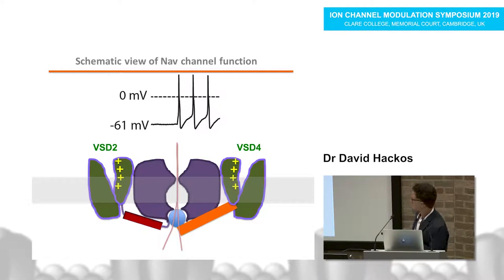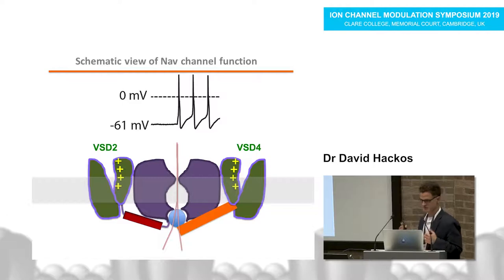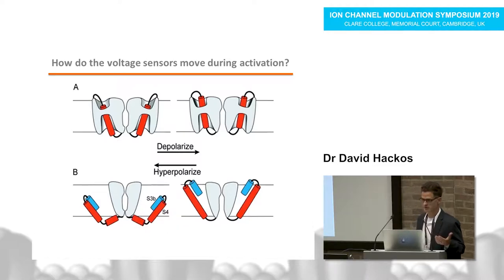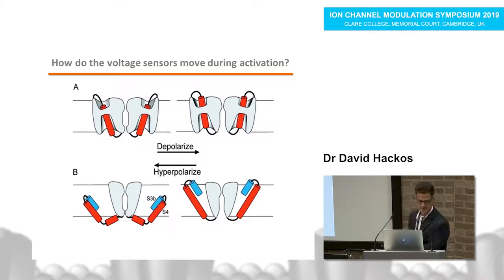Once sodium goes through the channels, a positive feedback loop causes the membrane to depolarize strongly, which causes all voltage sensors to move. Once VST4 moves into the upward position, the channel is shut off by the fast inactivation mechanism. After the membrane voltage recovers, the channel can return to the basal closed state and fire another action potential. These channels constantly fluctuate between these states, giving neurons the ability to fire trains of action potentials.